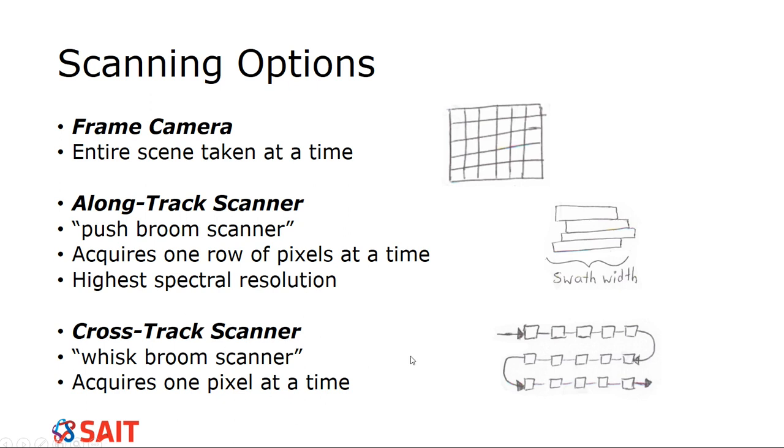Cross track scanners. These are known as whisk broom scanners. So if you can imagine, you've got a straw broom, and you're sweeping it across, back and forth. So when you have a whisk broom, it's a smaller broom, and it goes from one side of you to the other, and it's like mechanical. It requires a lot more energy. So if you're using a cross track scanner, you need to be on a sun-synchronous satellite, because it needs to be in the sunlight all the time, because it's got a mechanical thing it needs to run. And it just picks up one pixel at a time as it goes.